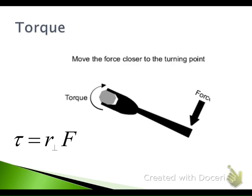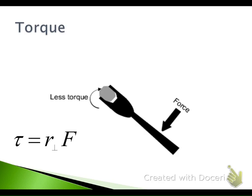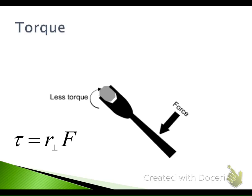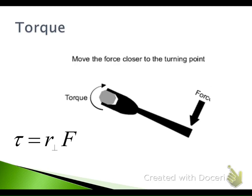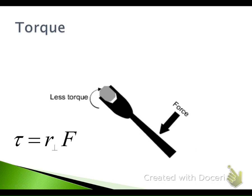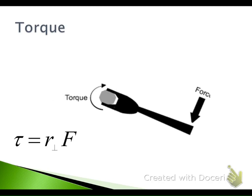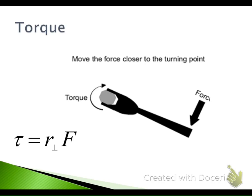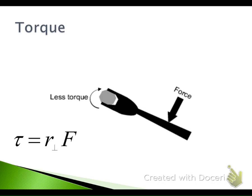Let's take a look at what this demonstration shows us. As you move the force closer to the axis point, you actually get less torque. There's a force acting on the farthest radius from the axis point, then it moves closer and it will turn again. As you move that force closer and closer to the axis point, you get less torque — it becomes less effective, giving you less rotation.